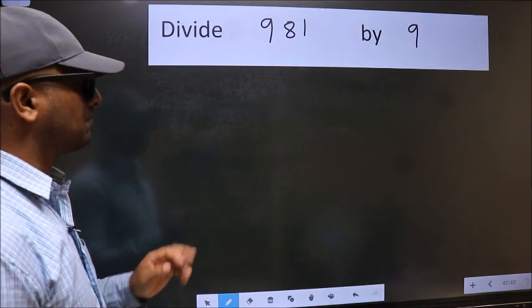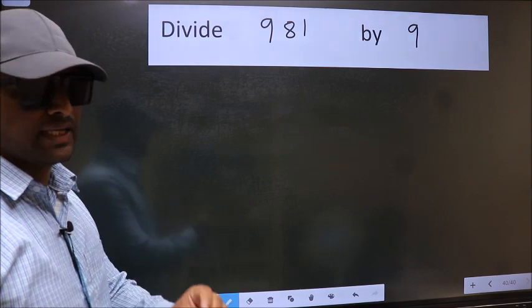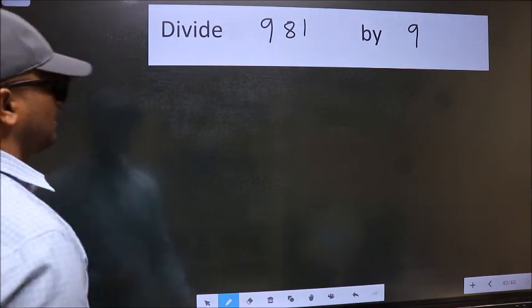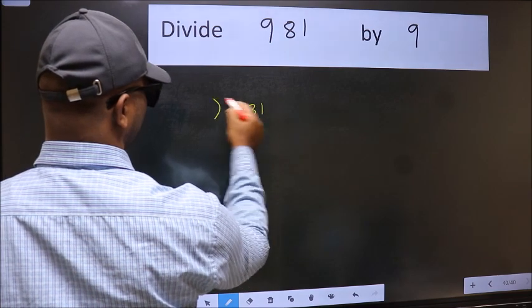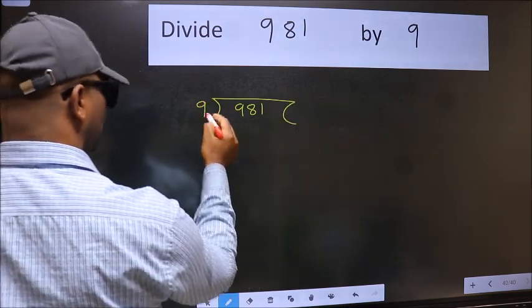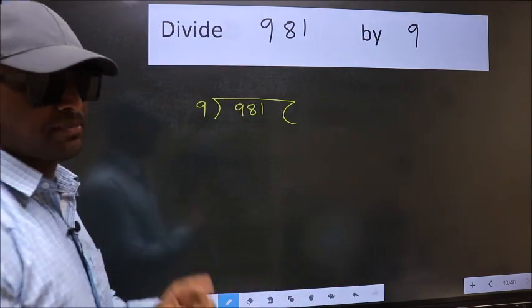Divide 981 by 9. To do this division we should frame it in this way: 981 here and 9 here. This is your step 1.